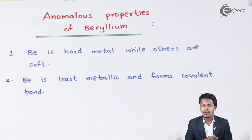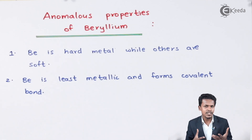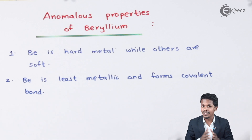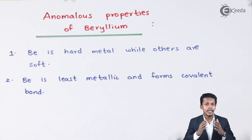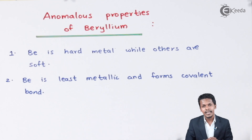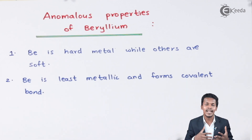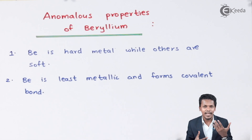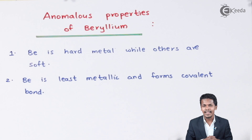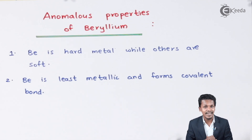But talking about beryllium, it does not form a compound which is ionic in nature. The reason is that beryllium has a smaller size compared to the other metals, so it is not as electropositive. As we move from top to bottom — from beryllium to radium — electropositivity increases. So beryllium has less electropositivity and doesn't form ionic bonds with halogens or oxygen. Therefore beryllium forms more covalent bonds.